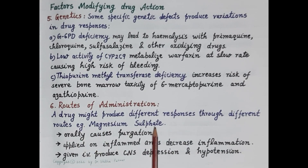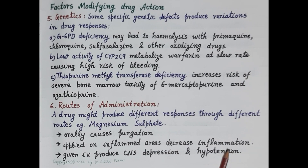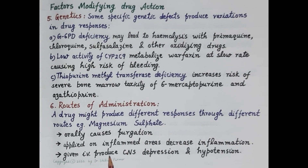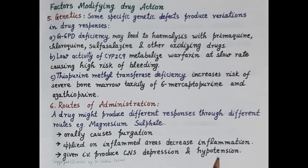For example, magnesium sulfate given orally causes purgation — cleaning of the bowel. When applied on an inflamed area, it decreases inflammation, producing an anti-inflammatory effect. When given by the intravenous route, magnesium sulfate produces central nervous system depression and hypotension.